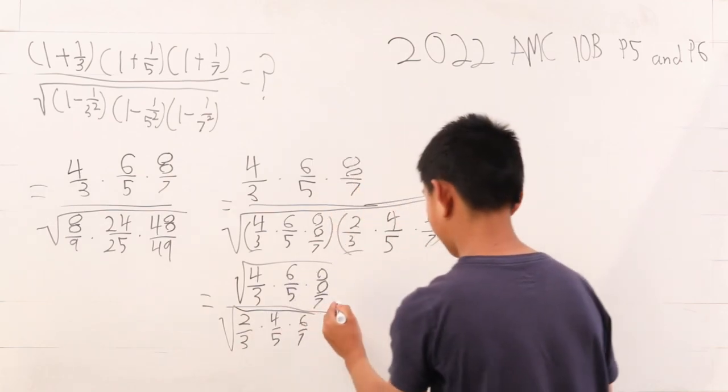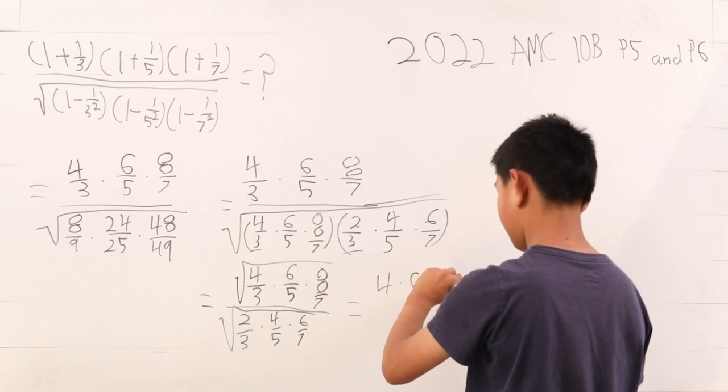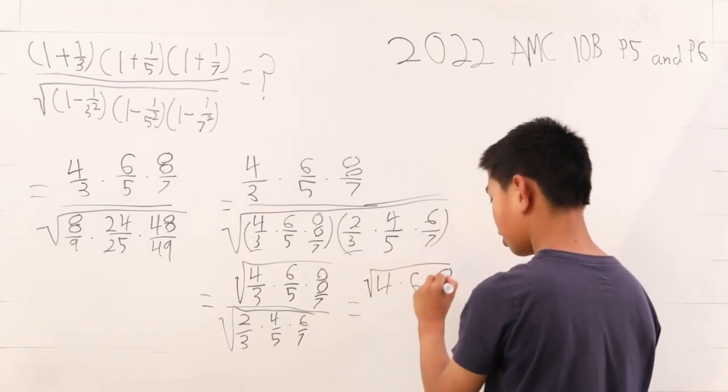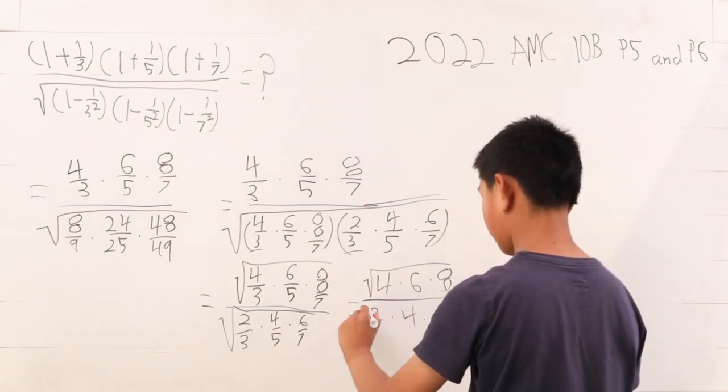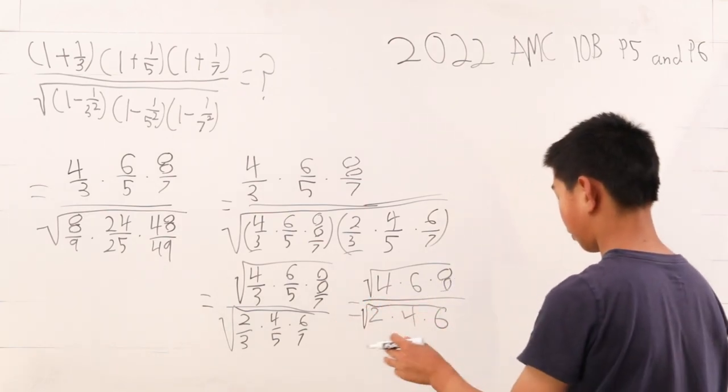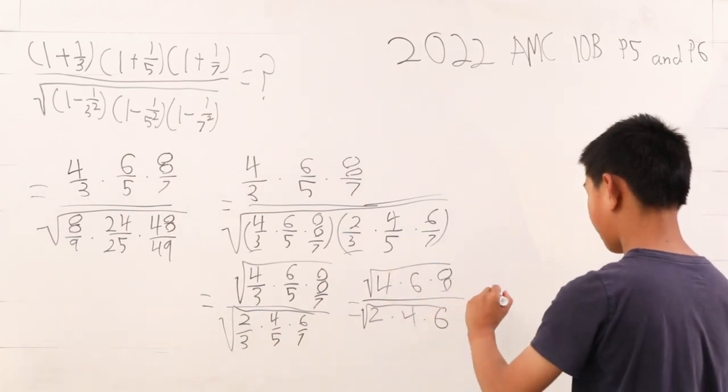We see here this is just 4 times 6 times 8, square rooted over 2 times 4 times 6, because the denominators cancel. So we can actually cross out some factors.